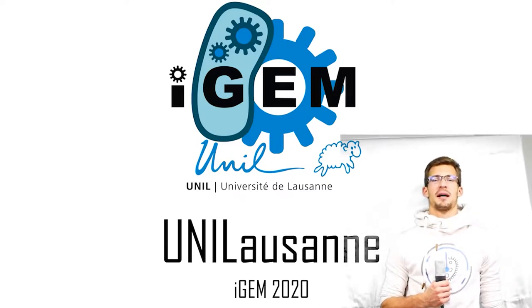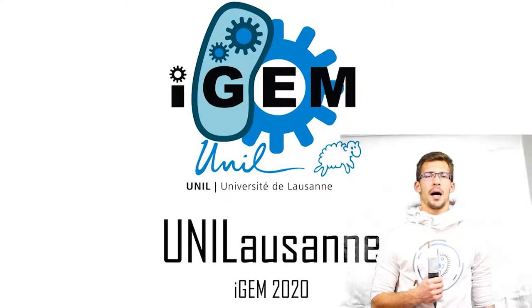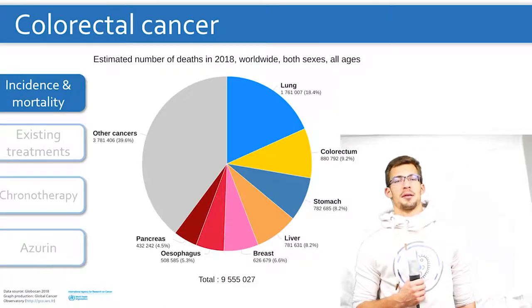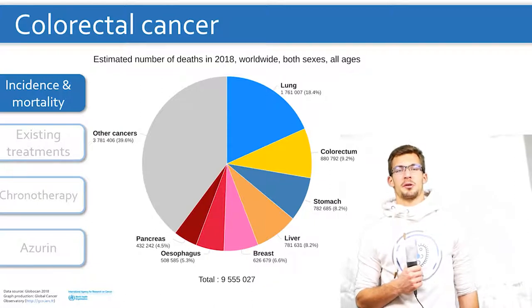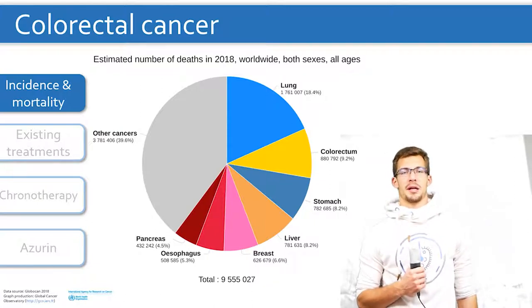We are the UniLuzern iGEM 2020 team. Welcome to our presentation. Our university is located at the center of cancer research. Because of that, our team naturally gravitated towards a project regarding that problem.